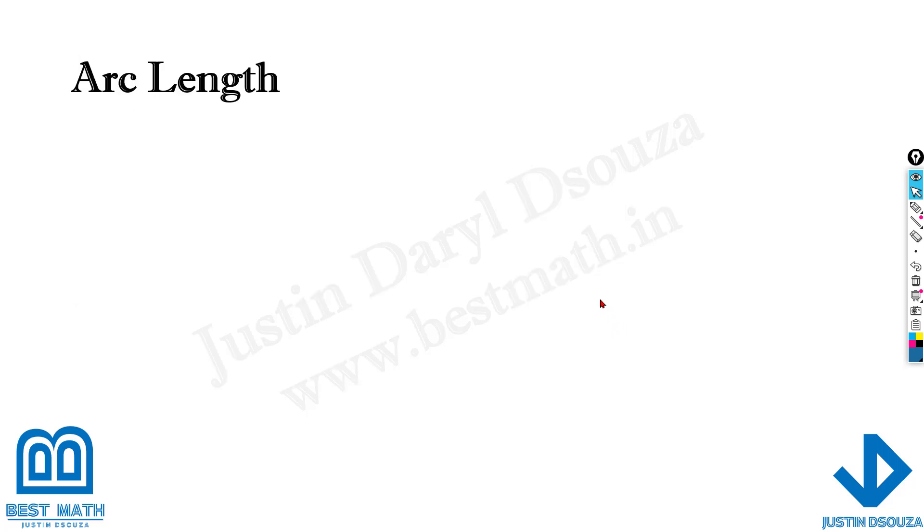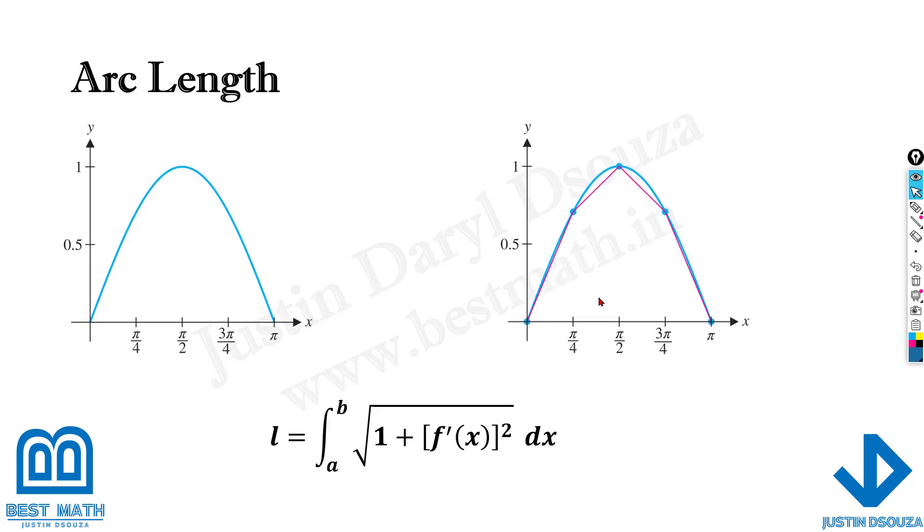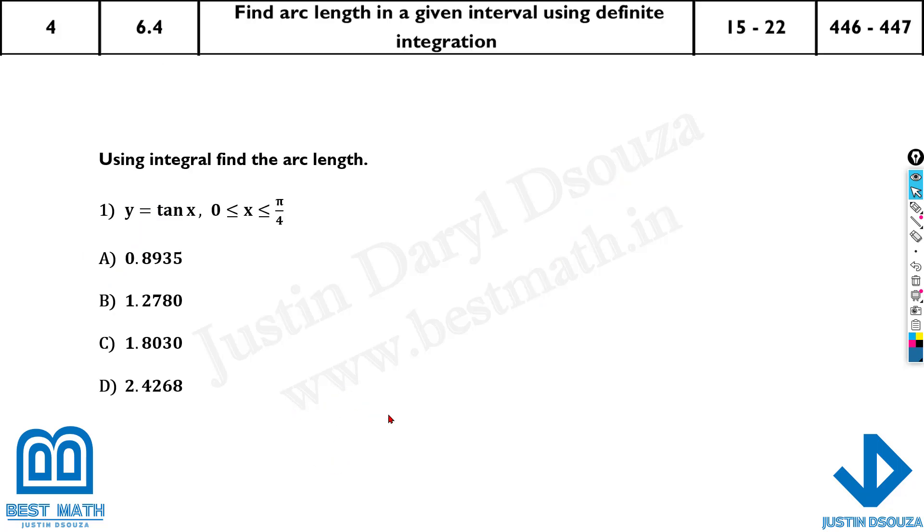So these are the inverse trig functions, and arc length formula is given as the square root of 1 plus derivative of the given function squared, dx, and the limit is from a to b. Let's solve a problem.